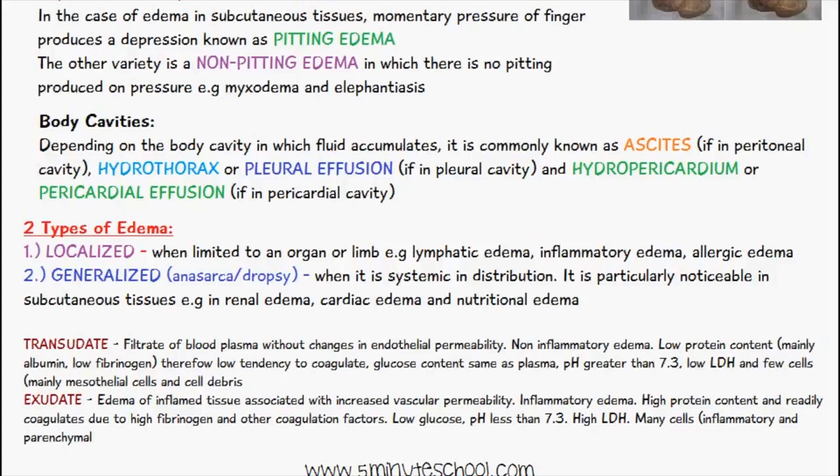Now, when we're talking about the fluid which is actually moving out and into these spaces, there are two different types of fluid it can be: it can either be transudate or exudate. If it's transudate, it's actually a filtrate of blood plasma without any changes in endothelial permeability. It's considered to be a non-inflammatory edema. There's a low protein content, and the main protein in it is albumin, with low amounts of fibrinogen, so it has a low tendency to coagulate.